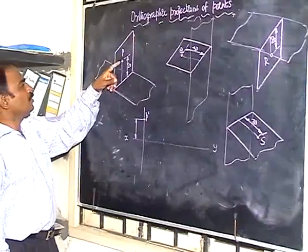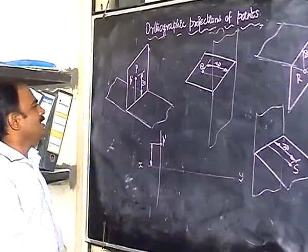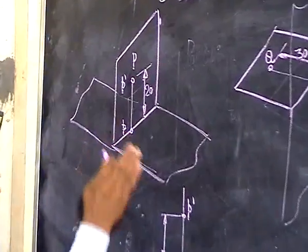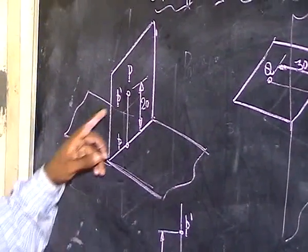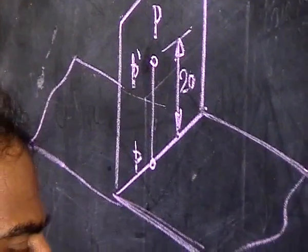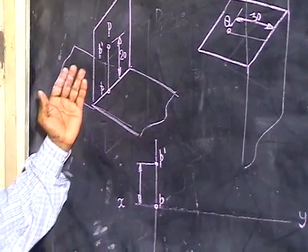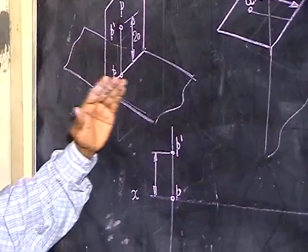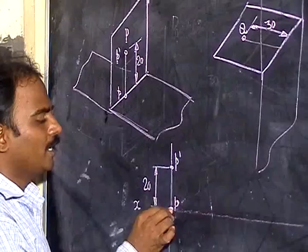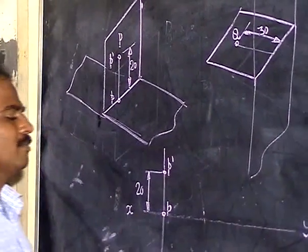Now for the top view of this point: P lies on the HP on the x-ray line, because it has no breadth. So if a point is on VP, its top view lies on the x-ray line. Mark the point on the x-ray line. So P is placed on the vertical plane common to the first quadrant and second quadrant — the front view is 20mm above the x-ray line, and the top view is on the x-ray line, because it has no breadth.